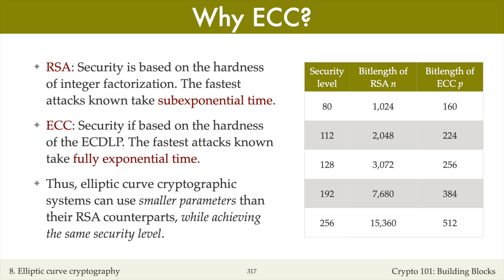The smaller parameters for ECC typically yield faster and more compact implementations, and also have smaller public keys and smaller signature sizes. This is why ECC can be advantageous over RSA.